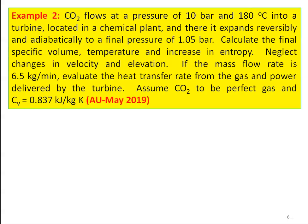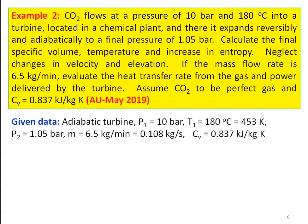Example number 2: CO2 flows at a constant pressure of 10 bar and 180 degree Celsius into a turbine located in a chemical plant, and there it expands reversibly and adiabatically to a pressure of 1.05 bar. Calculate the final specific volume, temperature, and increase in entropy. Neglect the change in velocity and elevation. If the mass flow rate is 6.5 kilograms per minute, evaluate the heat transfer rate from the gas and power delivered by the turbine. Assume CO2 to be a perfect gas and Cv equal to 0.837 kilo joules per kilogram Kelvin. Given data: adiabatic turbine, P1 equal to 10 bar, T1 equal to 180 degree Celsius which is 453 Kelvin, P2 equal to 1.05 bar, mass flow rate equal to 6.5 kilograms per minute which is 0.108 kilograms per second, Cv equal to 0.837 kilo joules per kilogram Kelvin.